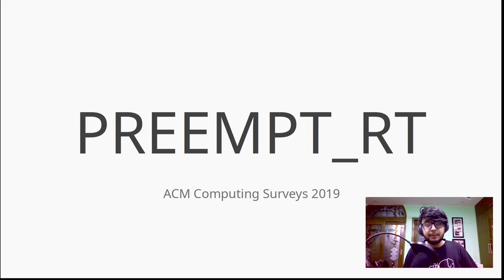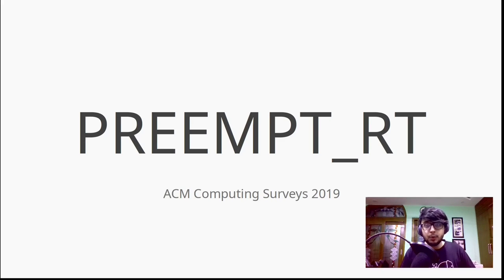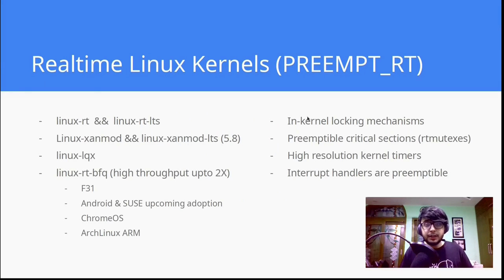Let's talk about Preempt RT, which is essentially a kernel patch used to create preemptable kernel threads in a Linux-based operating system. Around 2005, kernel developers realized that anything running in the critical section of an OS — especially in the kernel thread — has to run until completion; you cannot preempt a kernel thread process in the critical section using everyday mutexes. So they came up with the Preempt RT patch, which allows kernel threads and interrupts to be preemptable, using in-kernel locking mechanisms such as RT mutexes.